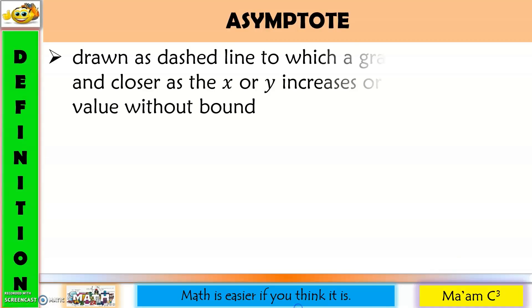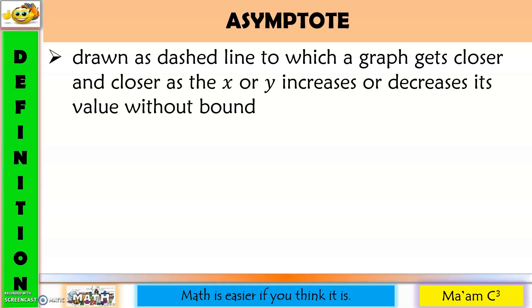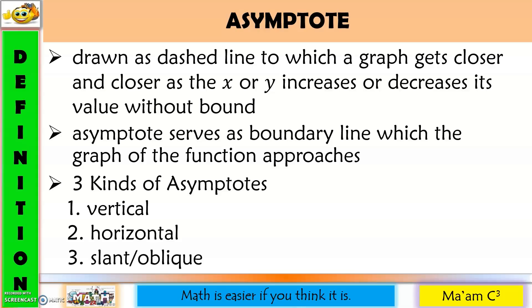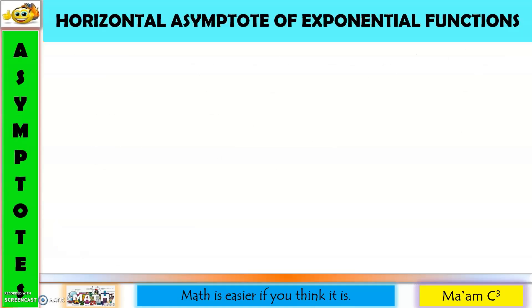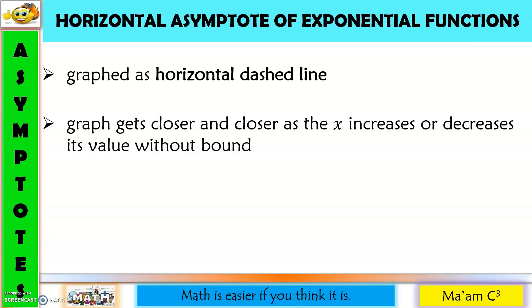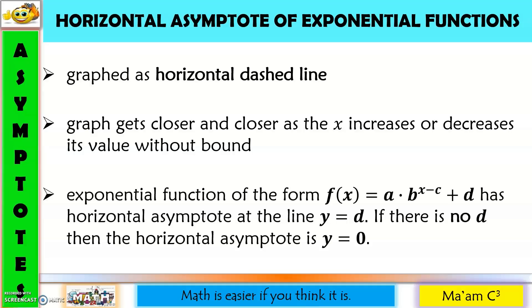Now let us discuss asymptotes. An asymptote is drawn as a dashed line to which a graph gets closer and closer as x or y increases or decreases without bound. It serves as a boundary line which the graph of the function approaches. There are three kinds of asymptotes: vertical, horizontal, and slant or oblique — but exponential functions only have horizontal asymptotes. For an exponential function of the form f of x equals a times b raised to x minus c, plus d, the horizontal asymptote is y equals d. If there is no d, the horizontal asymptote is y equals zero.